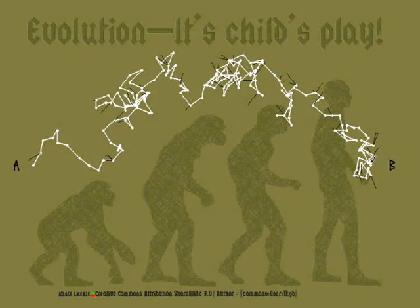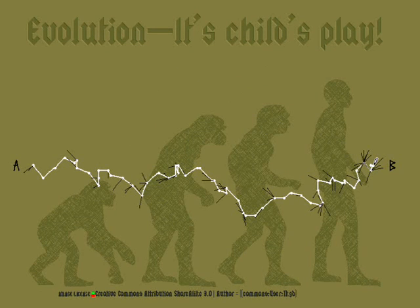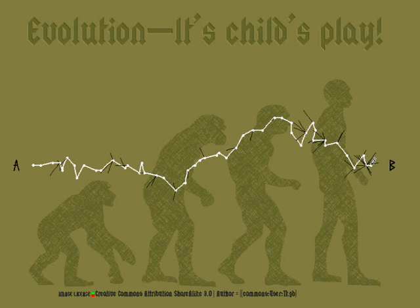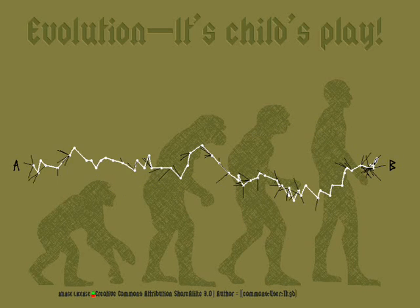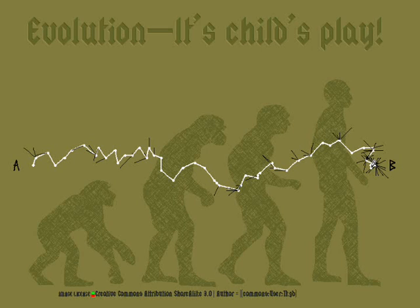Evolution is not an intelligent being. It has no purpose — it just acts. Adaptation can be achieved in many different ways, and only one thing matters: whether the change is beneficial. Here are a few examples of different evolutionary paths — the first at 50%, the rest at 100% rate of natural selection.